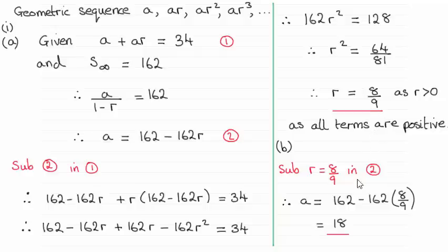And then to get the first term a it's just a question of substituting 8 ninths back into equation 2 which is what I've done. And that gives us a equaling 18. Okay?